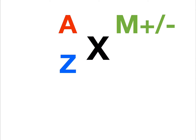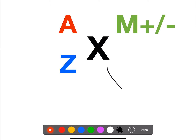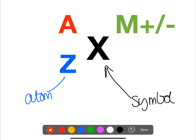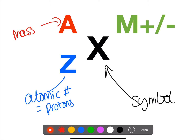So first of all a really short recap. Here we have what a basic nuclide notation would look like. X is the symbol for the element. Z is the atomic number and that is equal to the number of protons. A is the mass number and that is equal to the protons and the neutrons together.